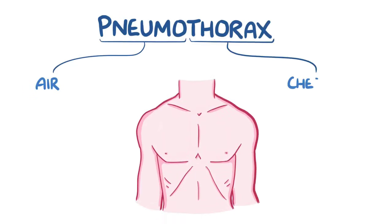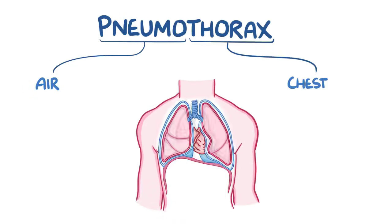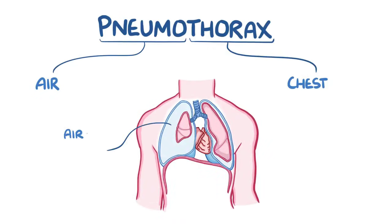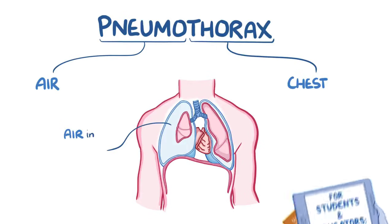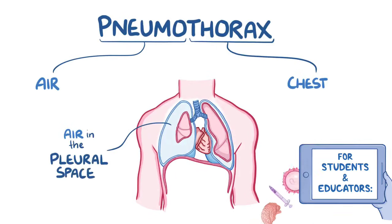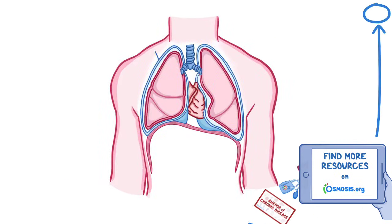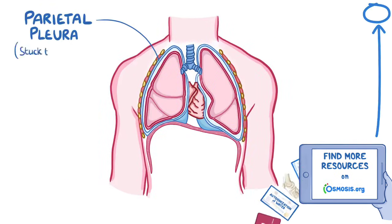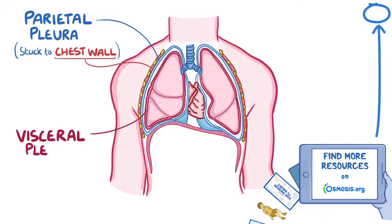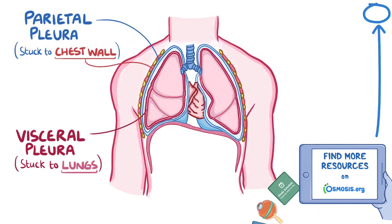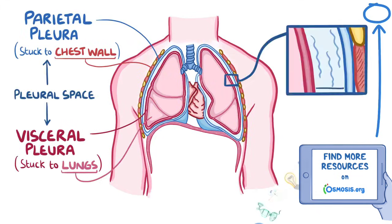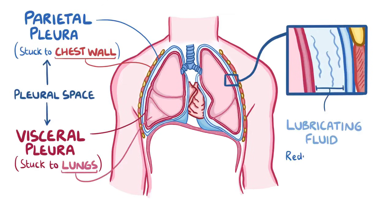Pneumo refers to air and thorax means chest, so a pneumothorax is when there's air in the chest — more specifically, air in the space between the lungs and the chest wall called the pleural space. The pleural space lies between the parietal pleura, which is stuck to the chest wall, and the visceral pleura, which is stuck to the lungs. The pleural space normally contains a lubricating fluid that helps reduce friction as the lungs expand and contract.